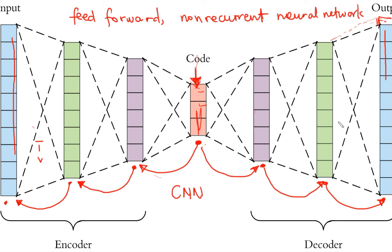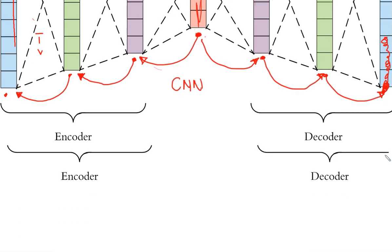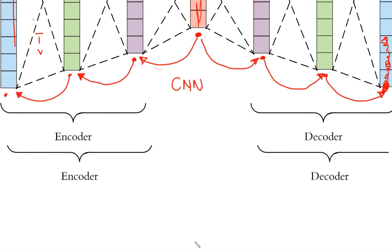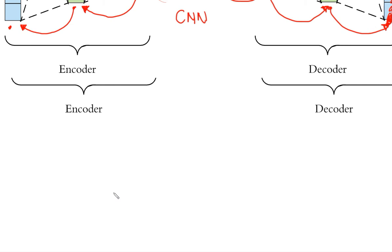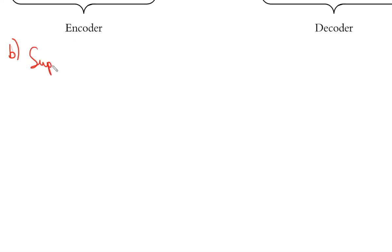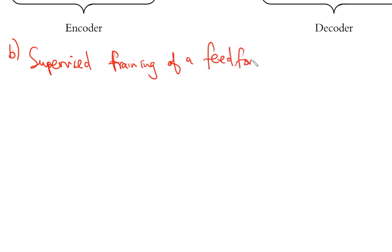This learned representation can then be used as input in a supervised learning model, hopefully to improve the supervised model's error. That is what an auto encoder is. Now for method B — it is supervised training of a normal feed-forward, non-recurrent neural network.